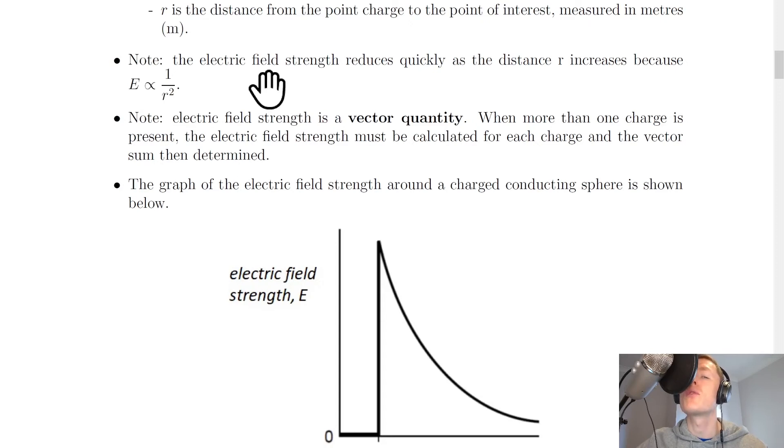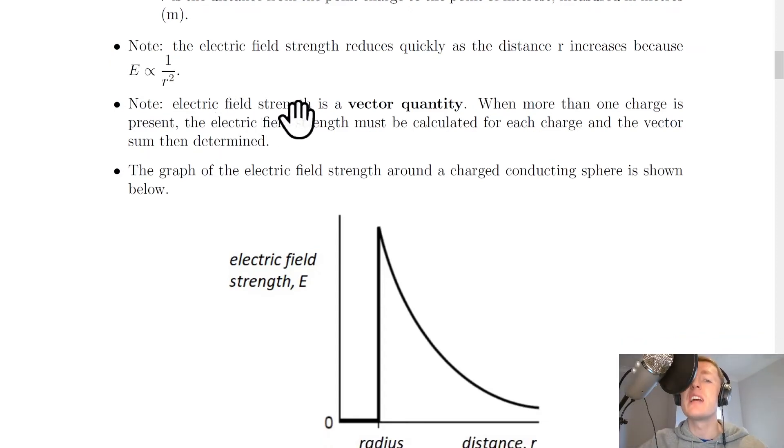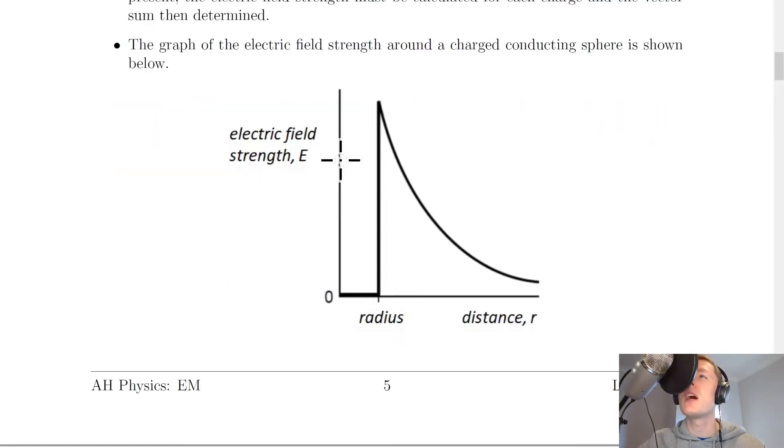Another note is that electric field strength is a vector quantity, just like Coulomb's inverse square law. When more than one charge is present, the electric field strength must be calculated for each charge, and the vector sum then determined. We can plot a graph of electric field strength around a charged conducting sphere, shown here.